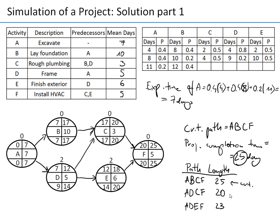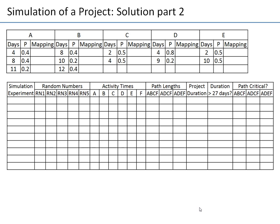When we simulate, the same three paths exist — the network structure and predecessors don't change. What changes is the duration of each activity, which is random. Each path will have a new length depending on random activity times, and a different path might become critical. The project duration equals the length of the longest path.